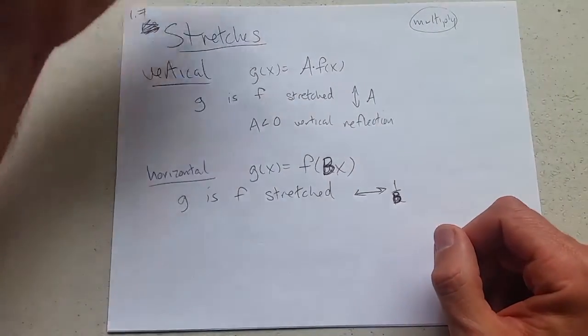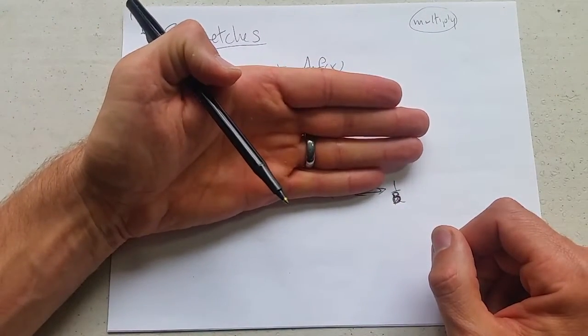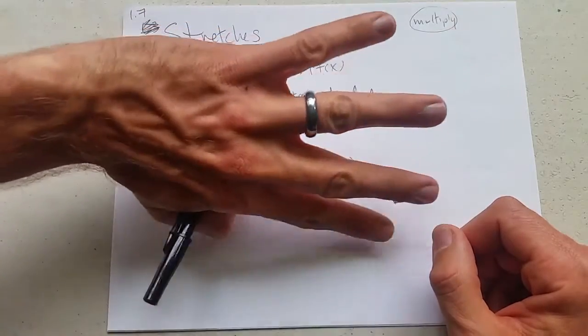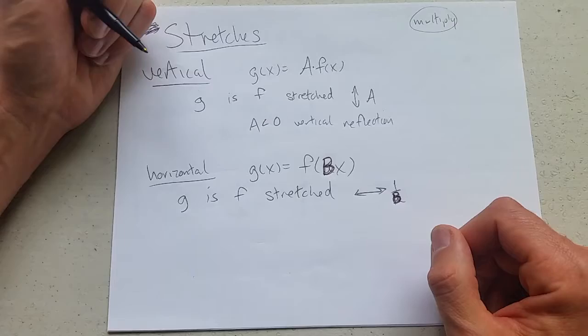What is vertical reflection? Instead of just taking things and stretching them, it could stretch, but it's also going to flip over the x-axis. That's what a vertical reflection does.